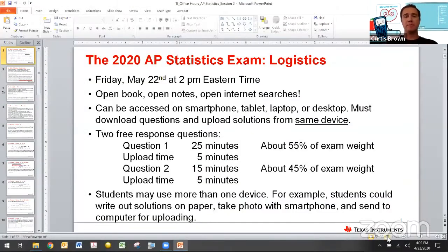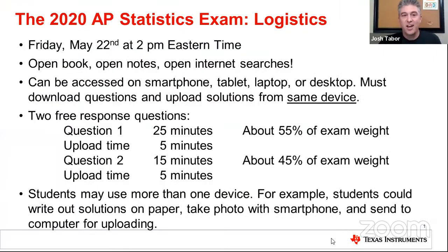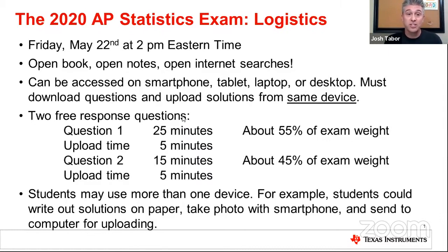I'm going to let you go ahead and get started and take it away. So what we're going to do to kick this off is review some information from two weeks ago at the previous office hours, and then go through another new question we created. The AP Statistics exam is on Friday, May 22nd, 2 p.m. Eastern time. So you have to adjust for whatever time zone you're in.